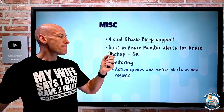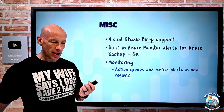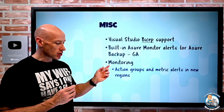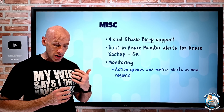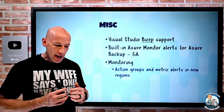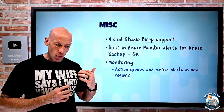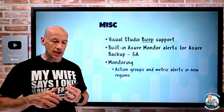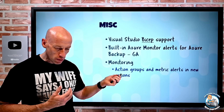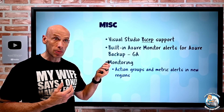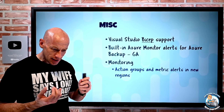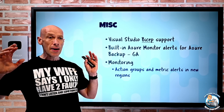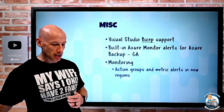On the monitoring side, action groups and metric-based alerts are now available in new regions. Action groups are now available in Sweden Central and Germany West Central, in addition to global regions. For metric alerts, it's North Europe, West Europe, Sweden Central, and Germany West Central. The key point is that the metadata and processing can now be ensured to stay in Europe.